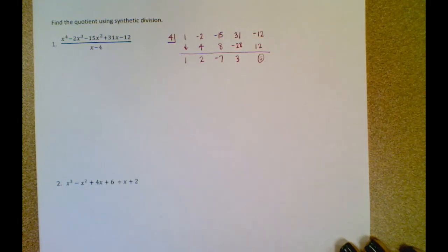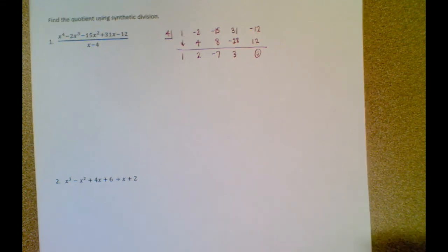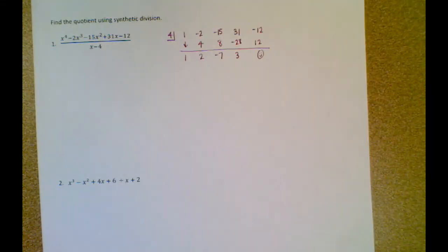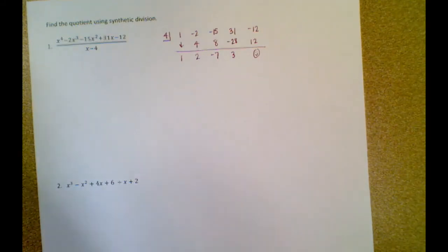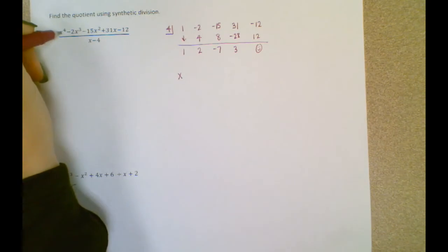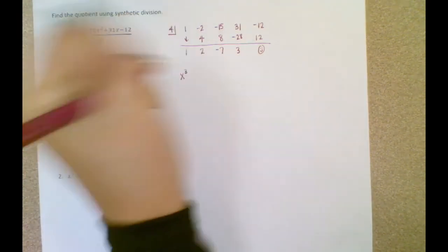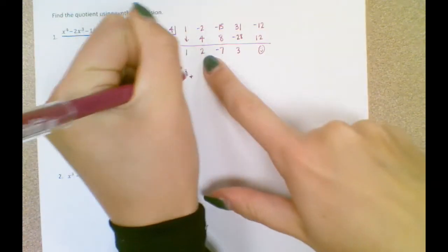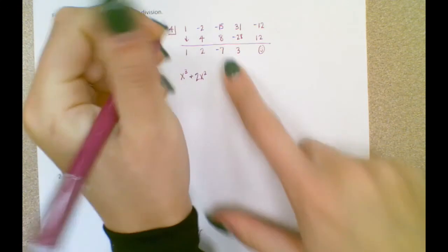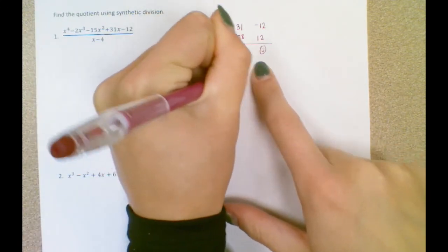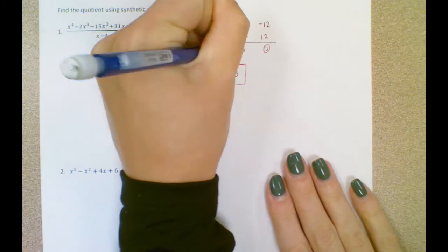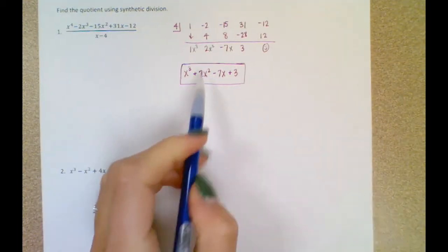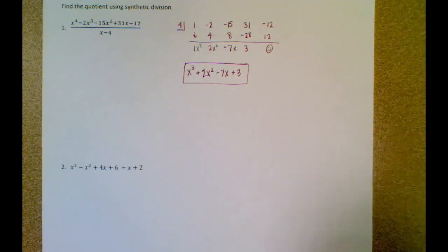Whenever I get remainder zero, I put a smiley face because I don't have to write that divisor as a remainder. Now I just fill in my blanks. I started with x to the fourth, so this is x to the third — one degree less. The coefficients give me: x to the third plus 2x squared minus 7x plus 3. That's your final answer.